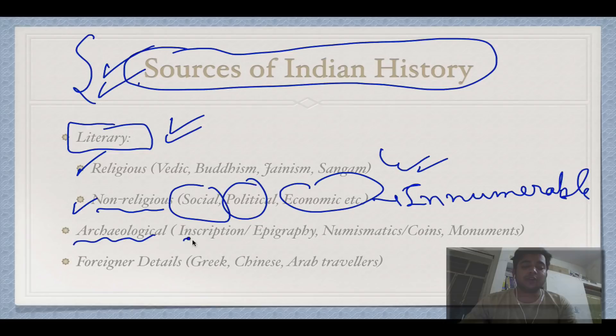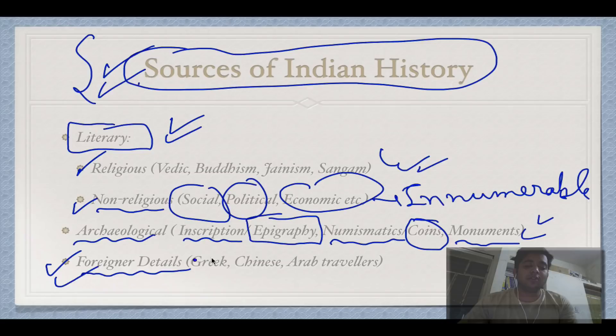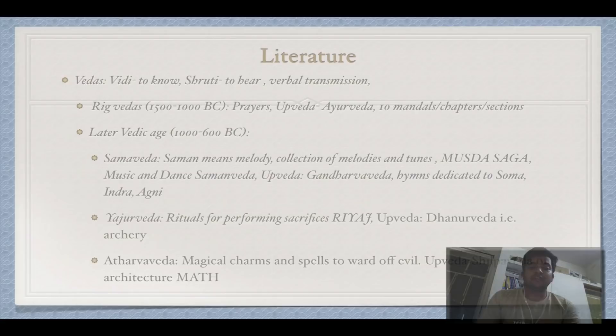Archaeological evidence is also important. The study of inscriptions is called epigraphy, and numismatics is the study of coins. There are also monuments, and foreign accounts from Greeks, Chinese, and Arabs, among others. Now let's start with literature.